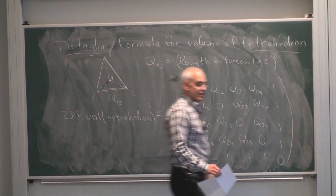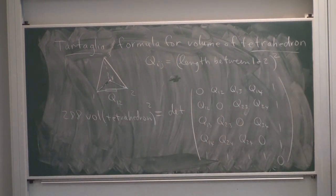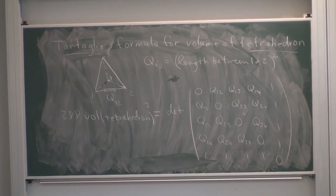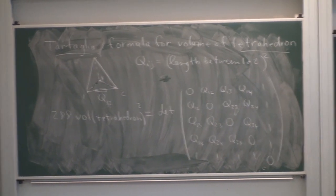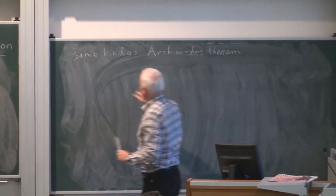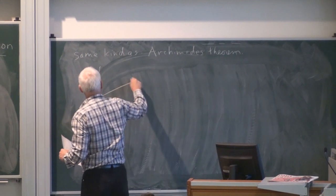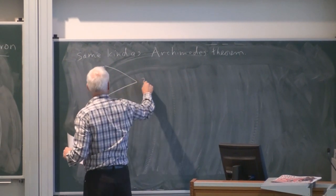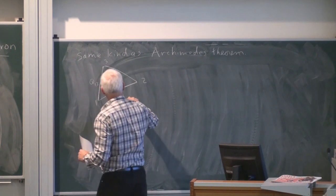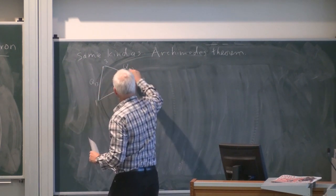In fact, this is the same kind of formula as what I called Archimedes' theorem. So if you have an ordinary triangle in the plane with vertices 1, 2, 3 and quadrances Q₁₃, Q₁₂, and Q₂₃,